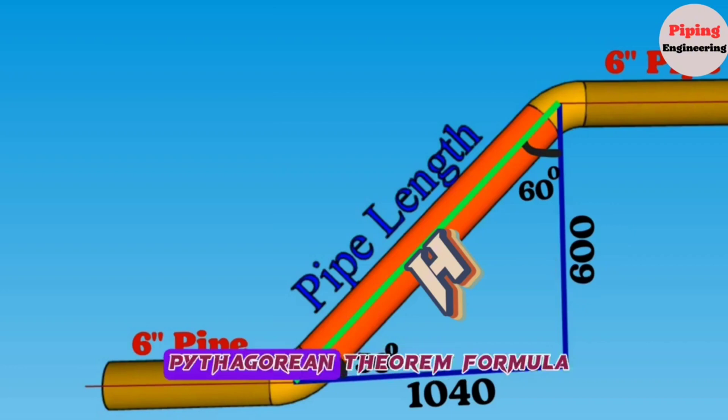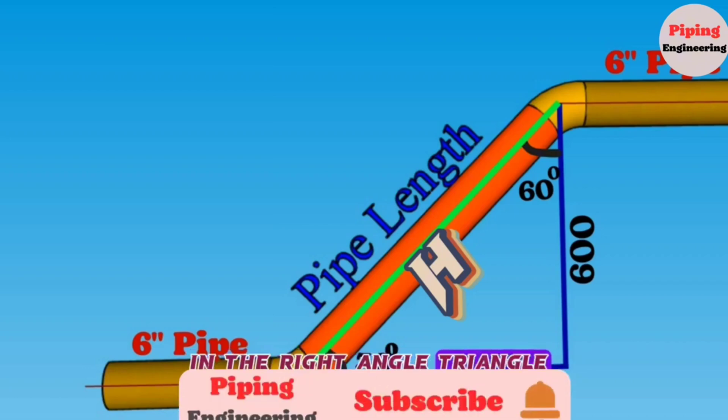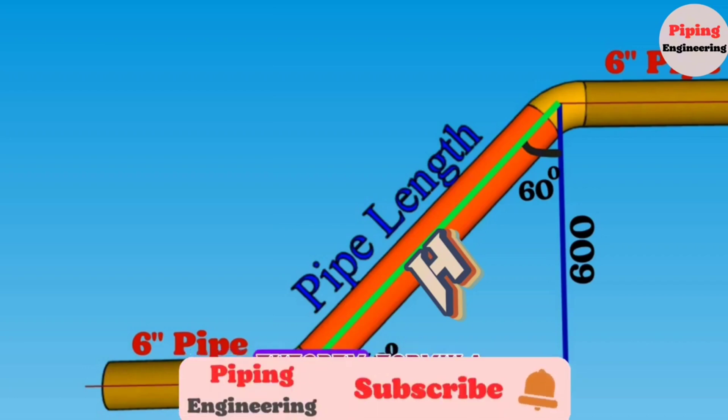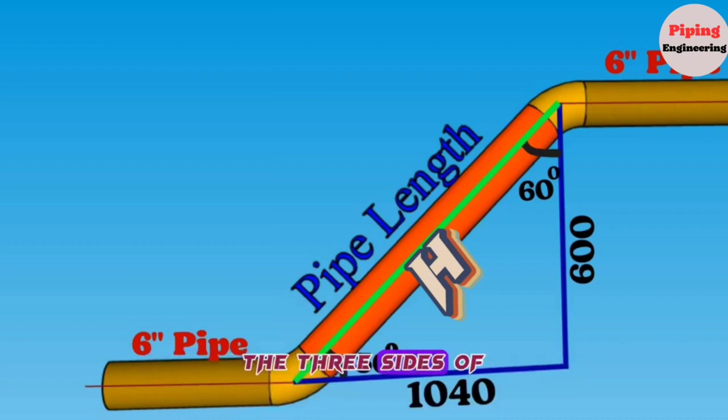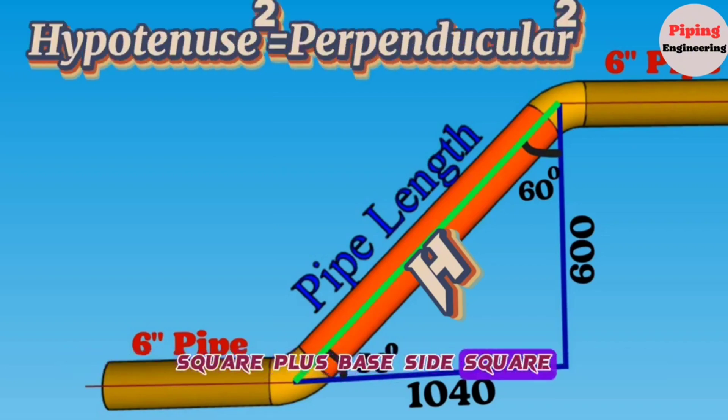We will use the Pythagorean theorem formula to find our hypotenuse in the right-angle triangle. The Pythagorean theorem shows the relationship between the three sides of a right-angle triangle. The square of the hypotenuse is equal to the sum of the squares of the other two sides. Hypotenuse squared equals perpendicular side squared plus base side squared.